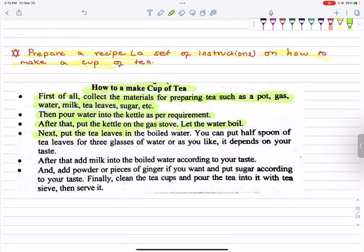Next, put the tea leaves in the boiled water. You can put half a spoon of tea leaves for three glasses of water or as you like. It depends on your taste. After that, add milk into boiled water according to your taste. And add powder or pieces of ginger if you want and put sugar according to your taste.